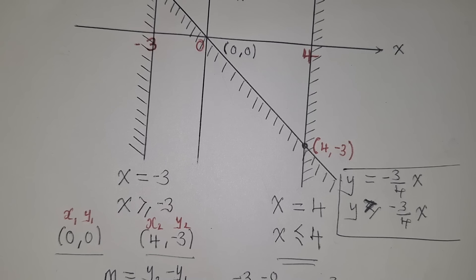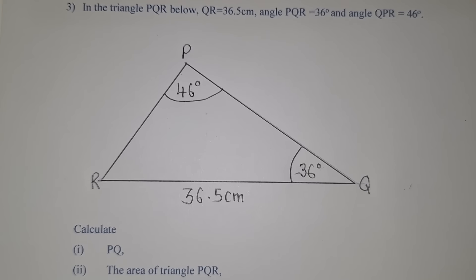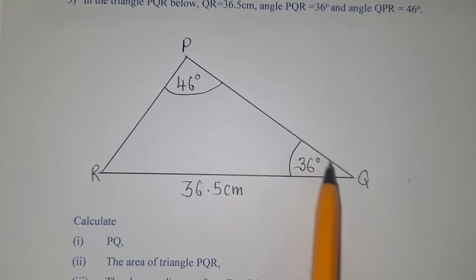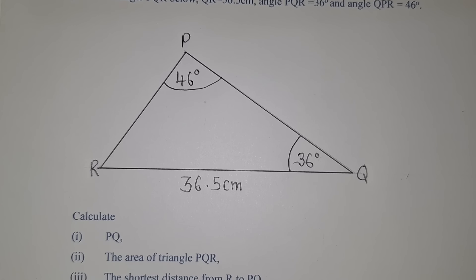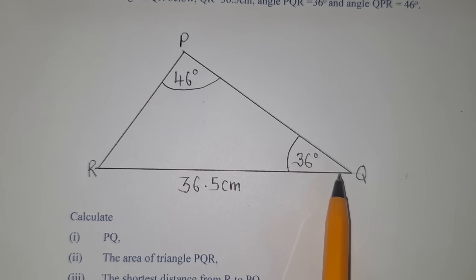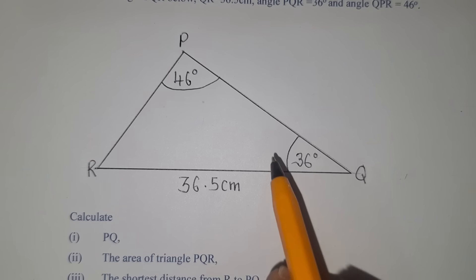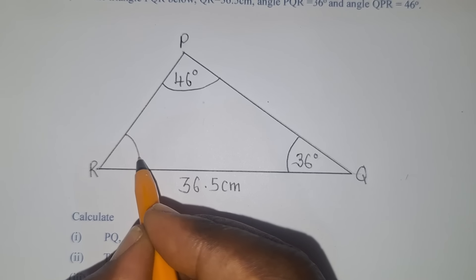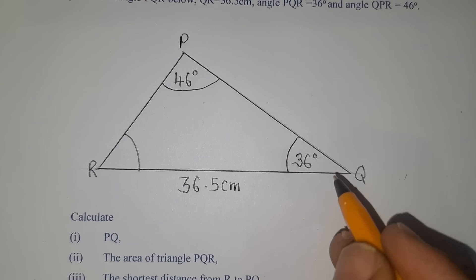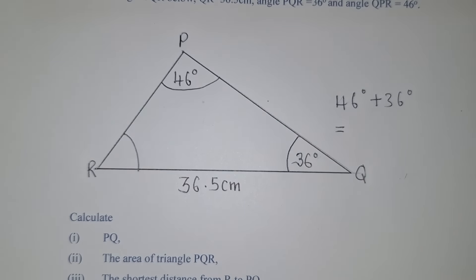For question 3, we need to calculate the length PQ. To find PQ, we must choose the correct law. Since we have two angles and one side, we use the sine rule. First, we need to find the missing angle in the triangle.